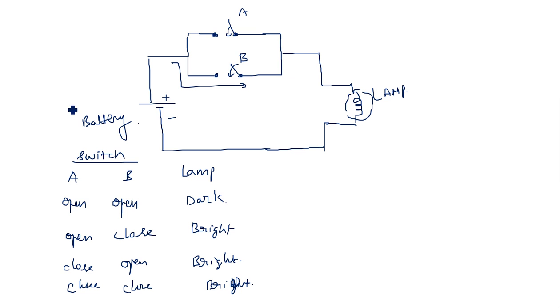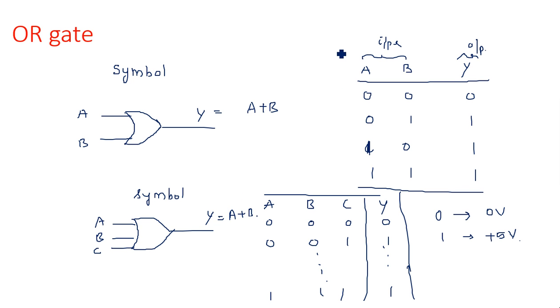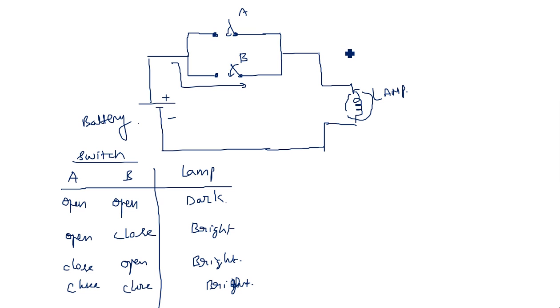When both A and B are closed, current flows through both switches and the light glows. If we draw the same table in terms of zeros and ones, we get the two-input OR gate truth table. This is the general operation of a two-input OR gate.